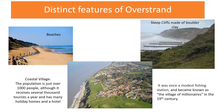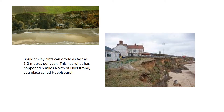Some of the distinctive features of Overstrand include natural physical features like beaches and steep cliffs made of boulder clay. A human feature is the village, which has a population of just over a thousand people but receives several thousand tourists each year. There is also a hotel, a caravan park, and several holiday homes. It used to be a small fishing village and was known as the 'village of millionaires' in the 19th century, so there are several large houses there still today.